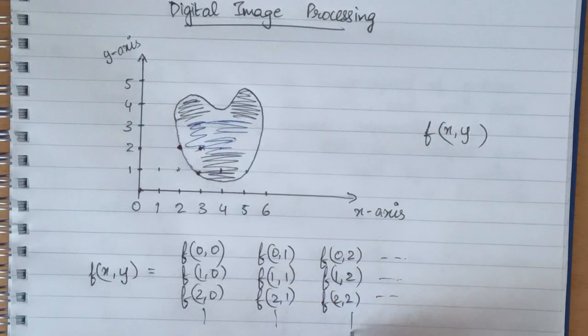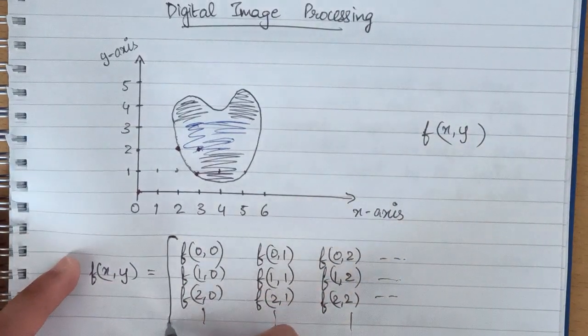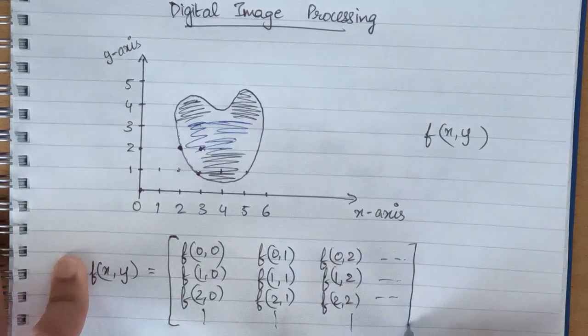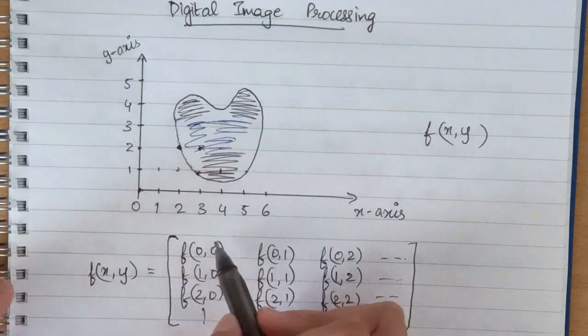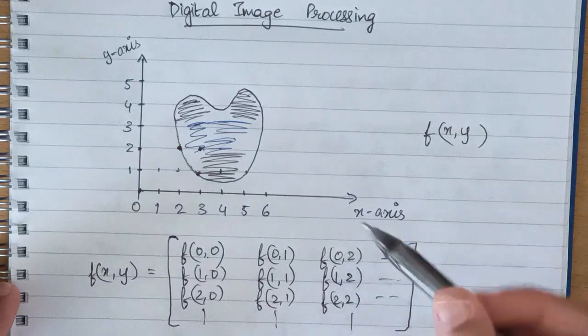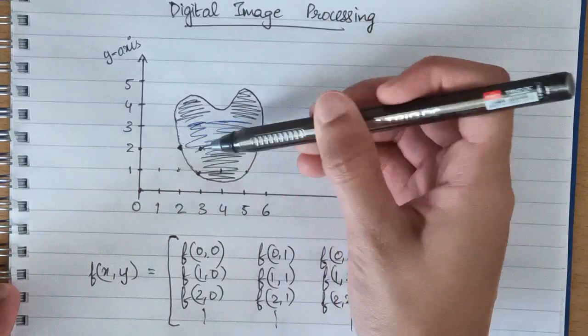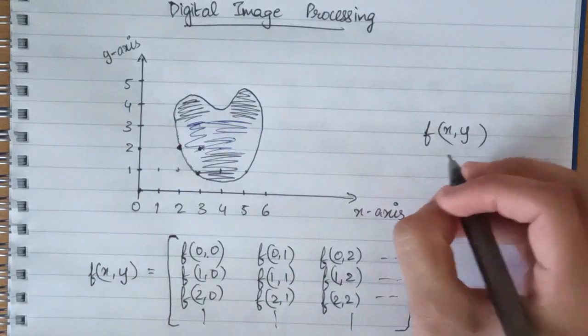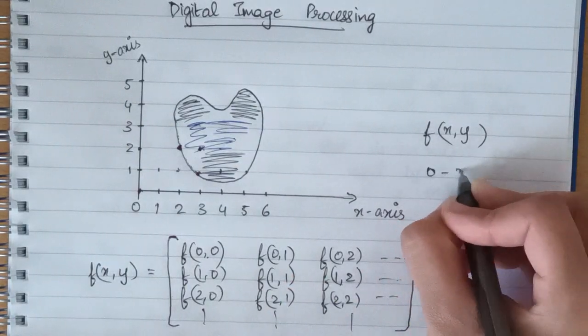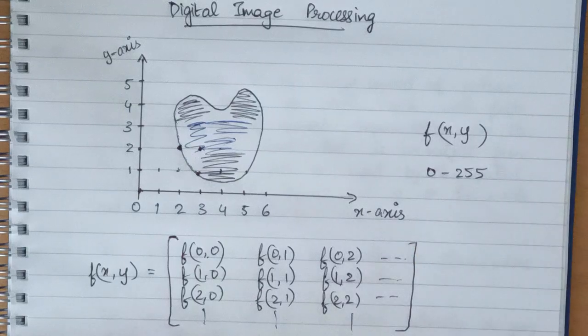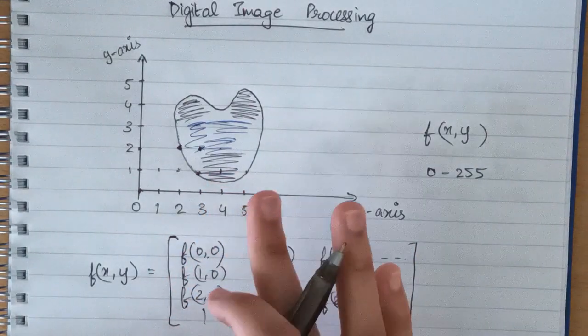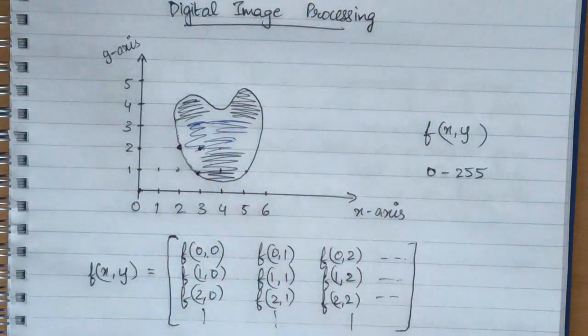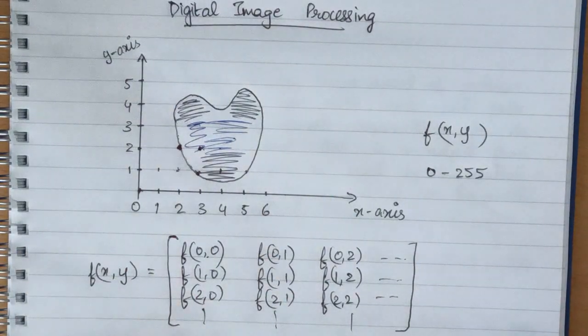In this way, this image can be represented with the help of this matrix where each of these matrix values have certain intensities. And in what range will they have these intensities? It will be in the range of 0 to 255 if this is an 8-bit grayscale image. So that's it for the representation part.